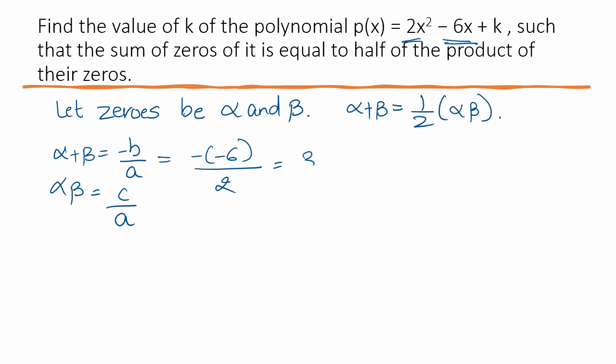c/a, you know, c is k and a is 2. So, c/a is k/2. Using values of alpha plus beta and alpha beta in equation 1.